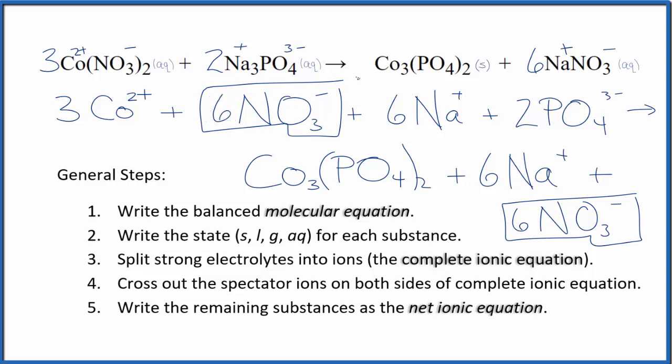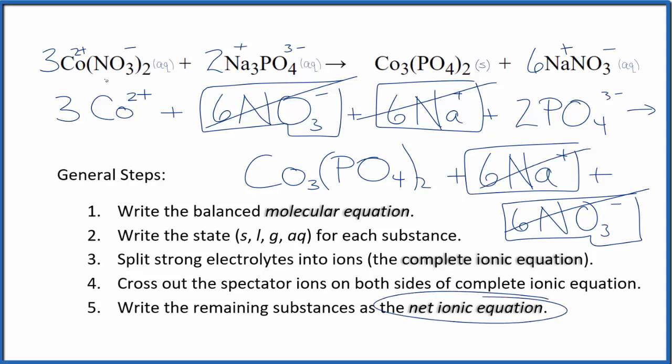So now I have 6 nitrate ions on both sides. I can cross those out, 6 sodium ions here, 6 sodium ions here. I can cross those out as well. And that gives me the net ionic equation for Co(NO3)2 plus Na3PO4. I'll clean this up and write the states in, and we'll have our net ionic equation.